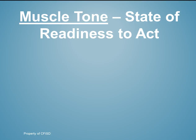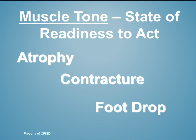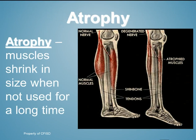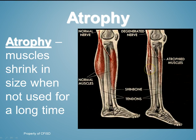Muscle tone is a state of readiness to act. We have three terms: atrophy, contracture, and foot drop. Atrophy means muscles shrink in size when not used for a long time — 'a' means away from, 'trophy' means growth, so away from growth, meaning they are shrinking. This typically happens after an injury when you are unable to move the muscle for long periods of time.